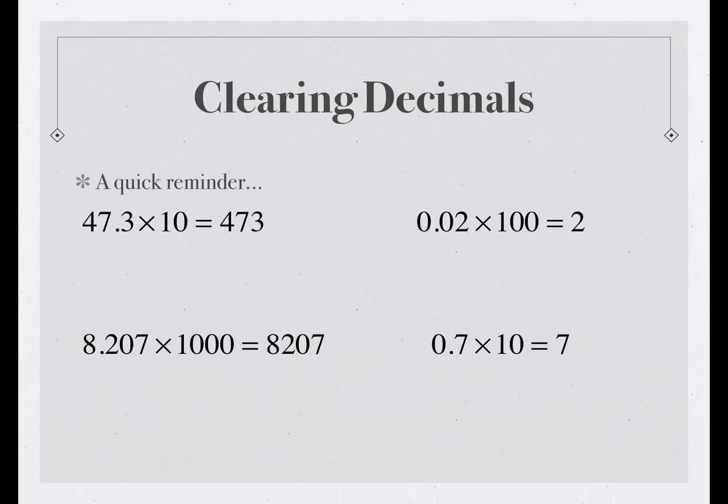And we can multiply 7, or 0.7, 7 tenths by 10 to get 7. So, all of these things will help us get decimals out of equations and make them easier to solve. So, let's take a look at some examples.